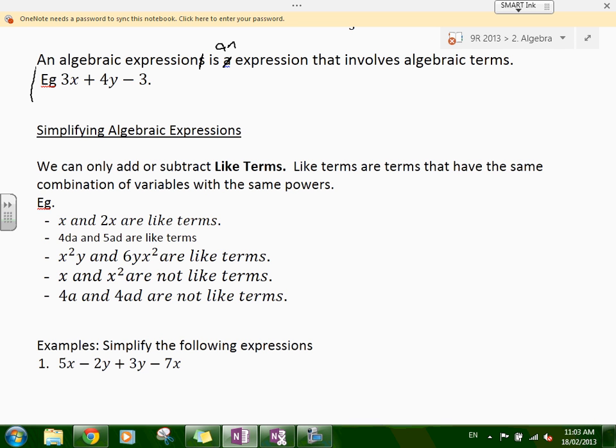4a and 4ab are not like terms because the combination is different. Just because they both have a in them doesn't mean we can add them together. 4 lots of a and 4 lots of a times b are very different. You can't just add them and simplify that same way. You can factorize that - there's a factor of 4a, but you cannot simplify by adding or subtracting.